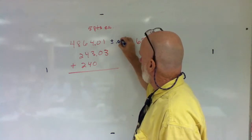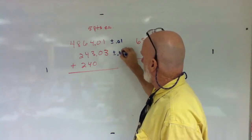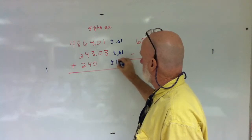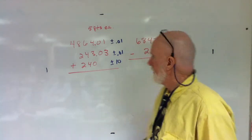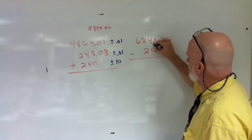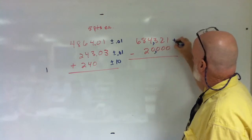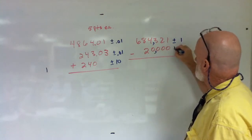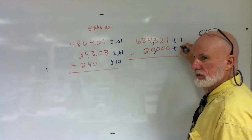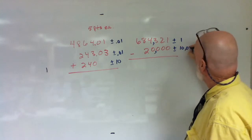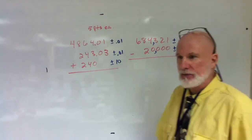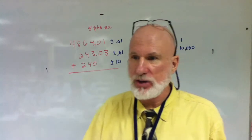This is going to be plus or minus 0.01, plus or minus 0.01, plus or minus tens. This is going to be plus or minus ones and plus or minus 10,000.